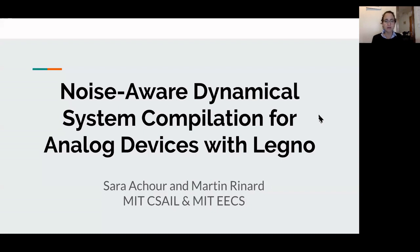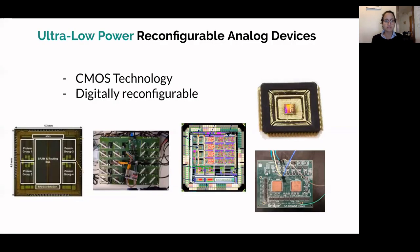Before I talk about compiling to these devices, I do need to introduce them more formally. The devices I'll be talking about today are CMOS chips that basically leverage the analog behavior of transistors to perform computation. These devices are digitally reconfigurable, which means we can reprogram them on the fly by digitally setting bits to implement a variety of different computations.